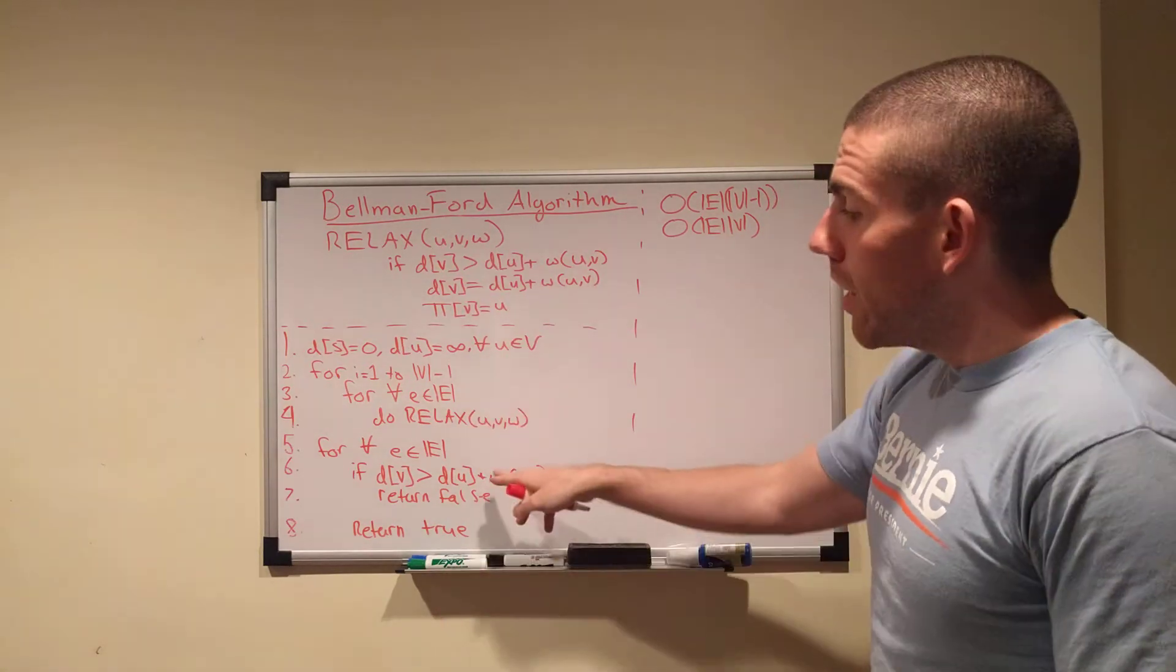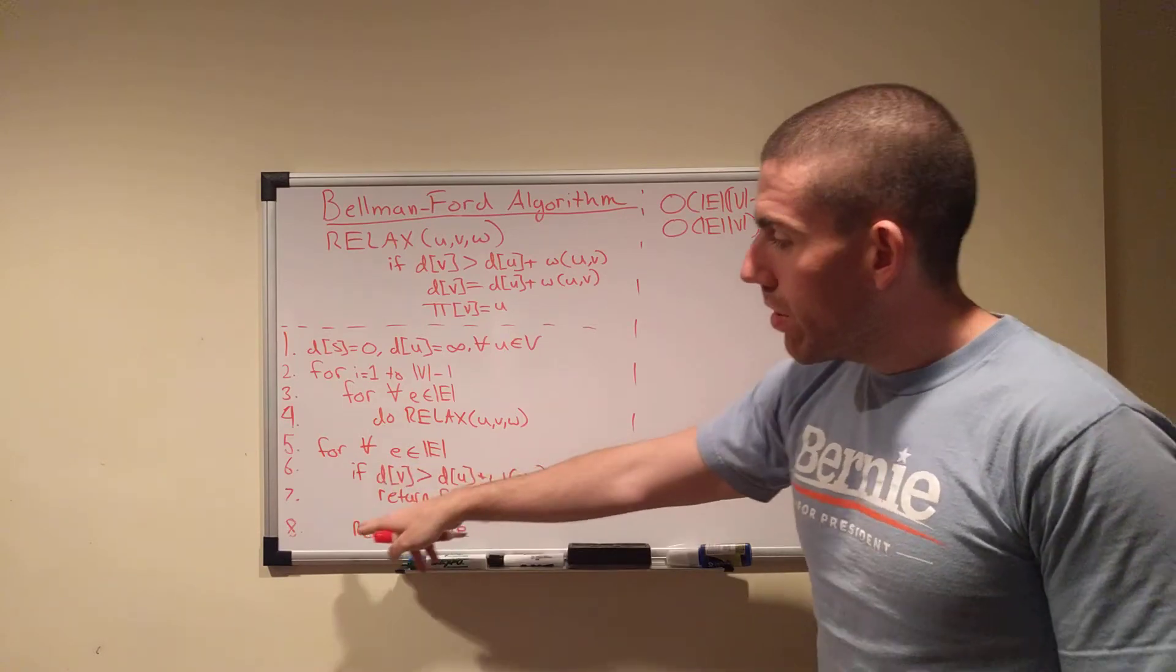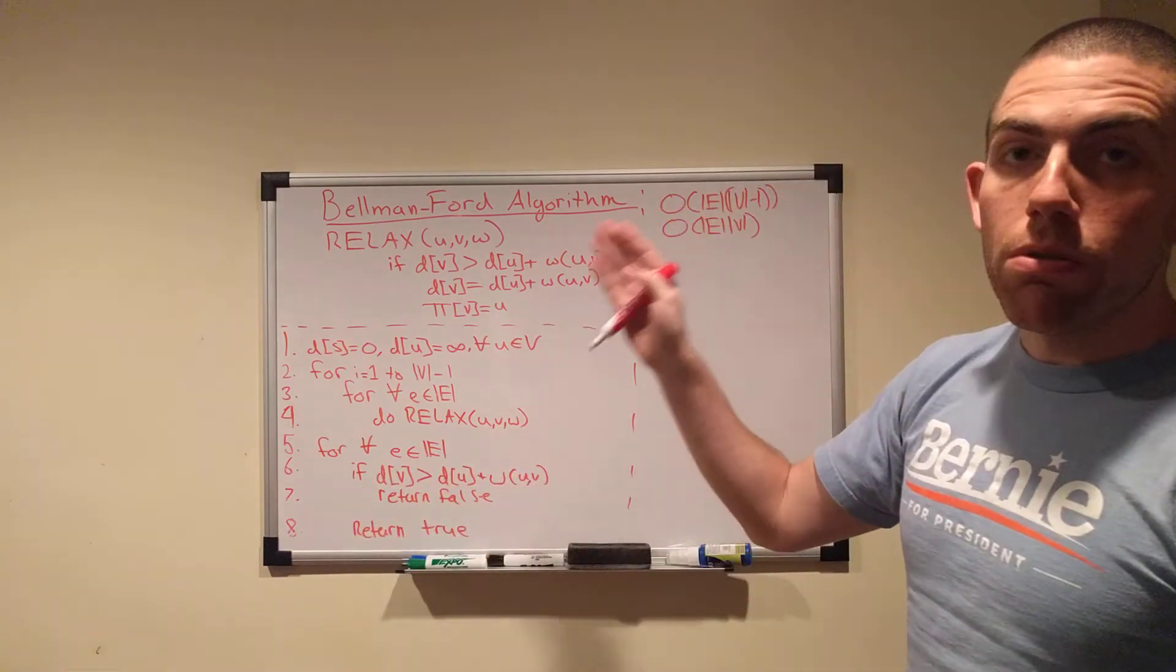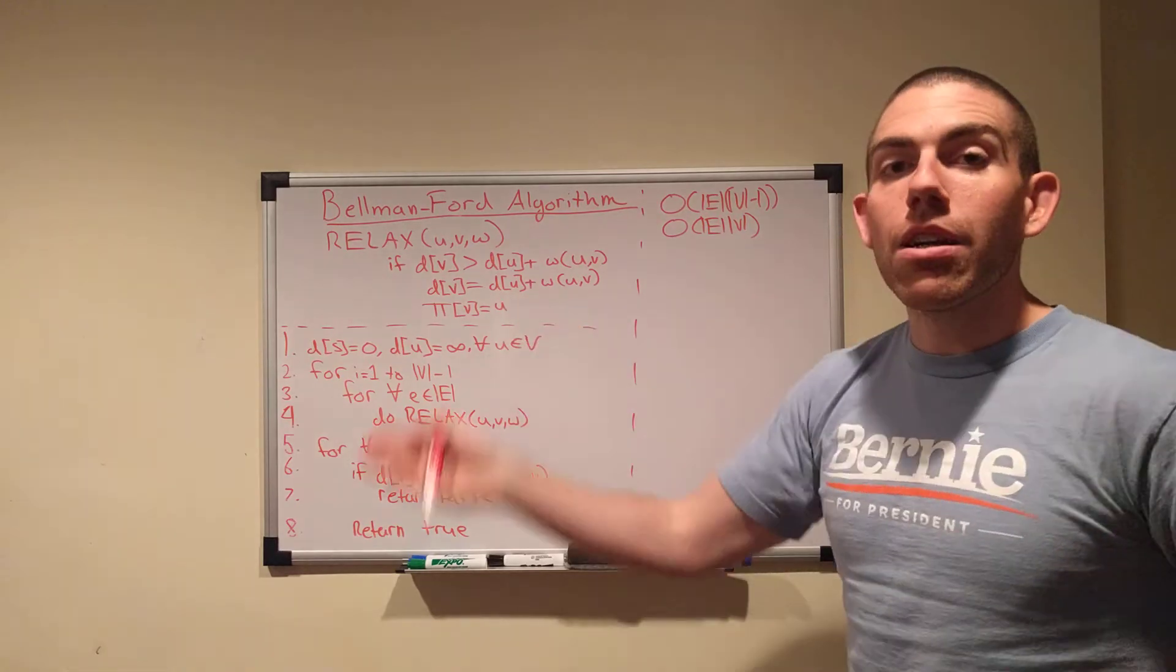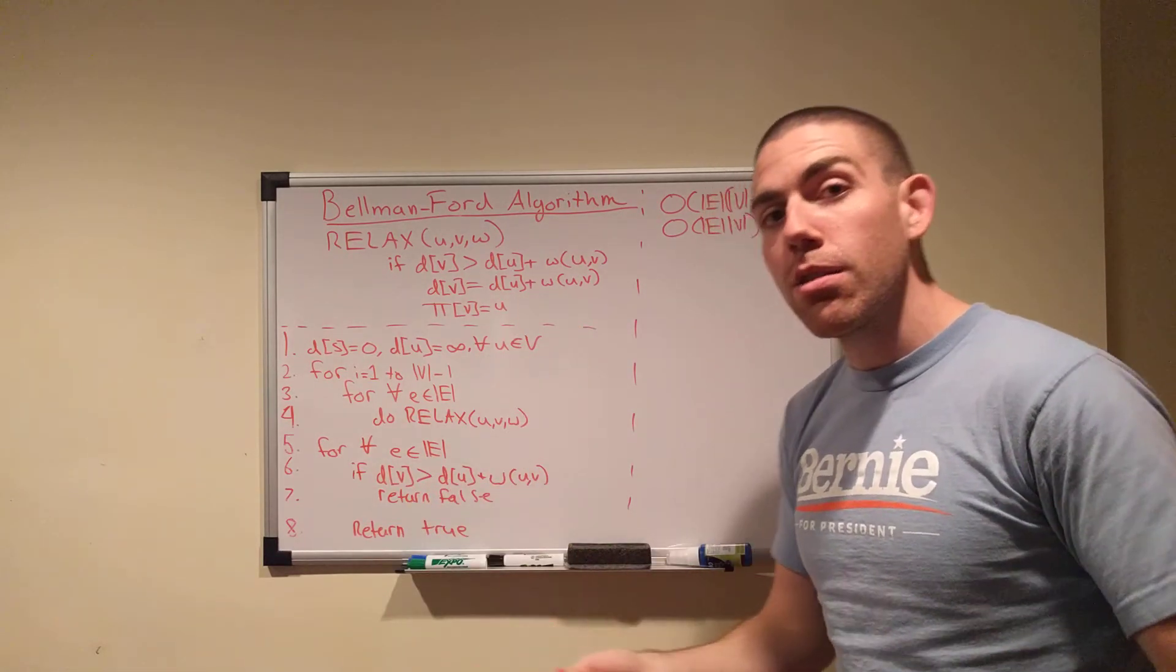In that case, we would just return false. The algorithm will exit and probably print an error message saying, you have a negative cycle in your graph, you can't work with this. If, however, we go all the way through, line 8, we just return true. And then at that point, we can start printing out our previous array and give all the paths and the path lengths and be useful.